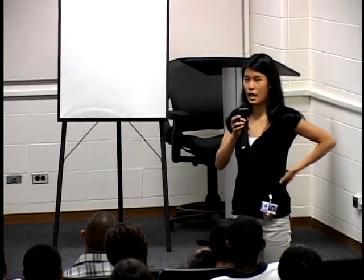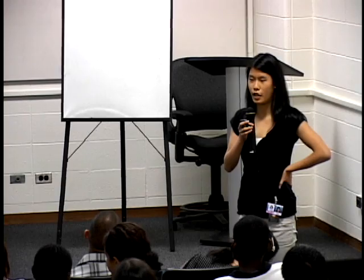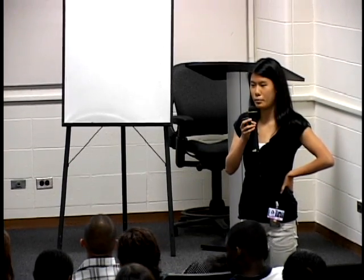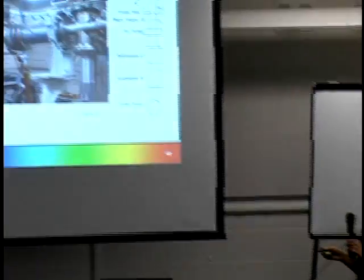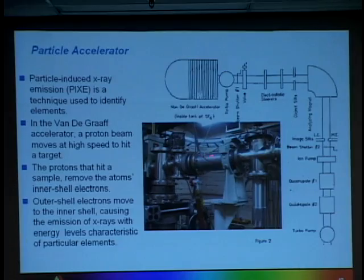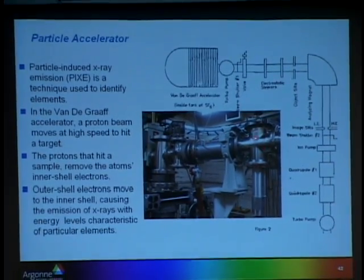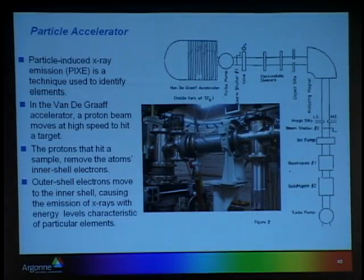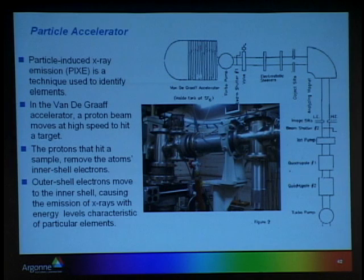To use this technique, one uses an accelerator to send a proton beam at a target. This is part of the accelerating column, and here is where we mounted the target. This is a process similar to x-ray fluorescence, where something with high energy hits the sample, causing the inner electrons to be removed and outer electrons to take their place.